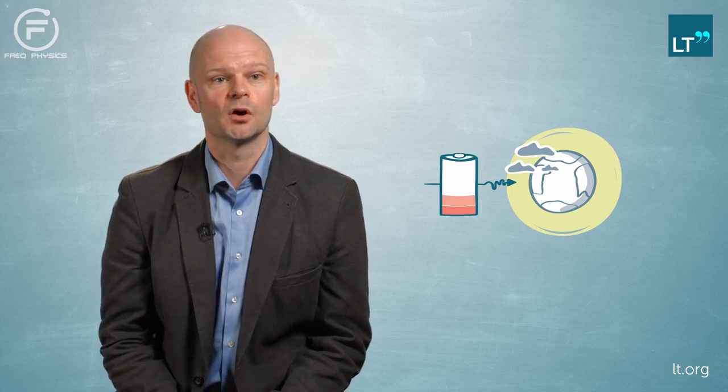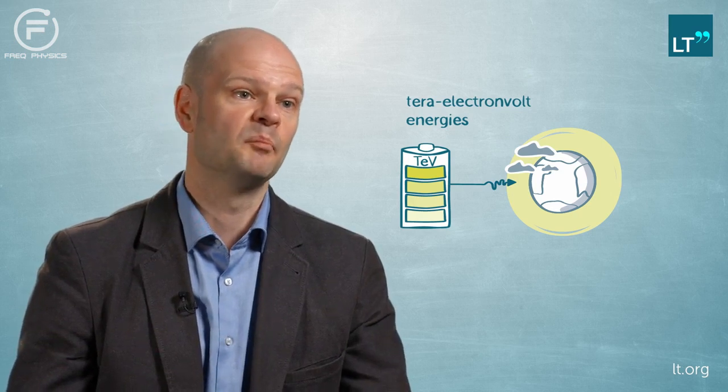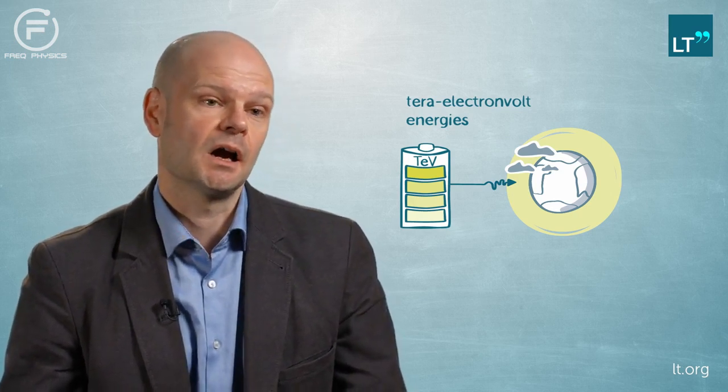But at these tera electron volt energies, we're talking about photons that are a billion times more energetic than x-rays. What happens is that the interaction of the gamma ray produces a cascade of particles in the Earth's atmosphere.